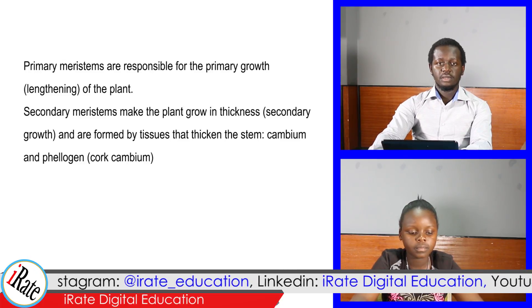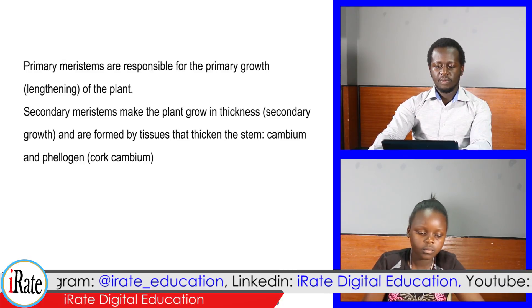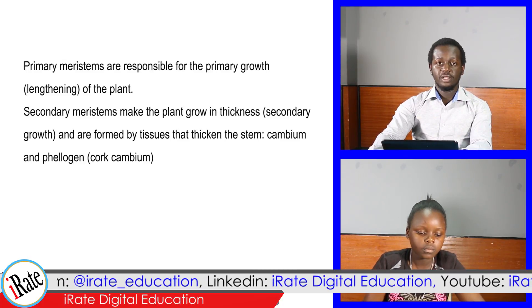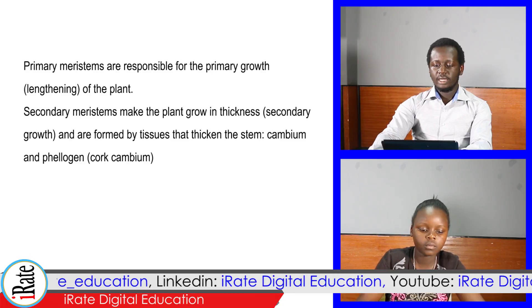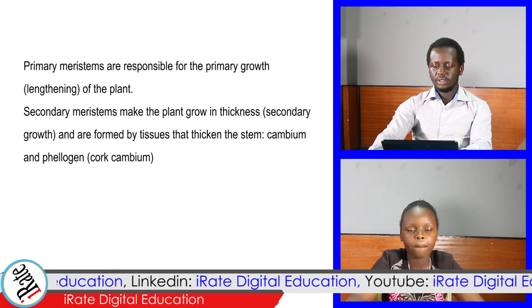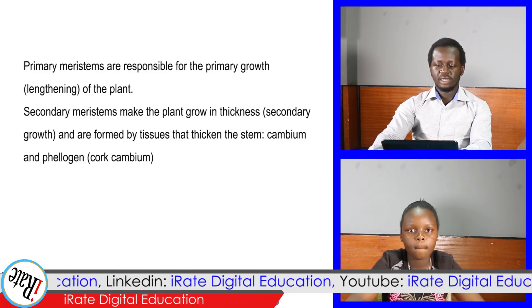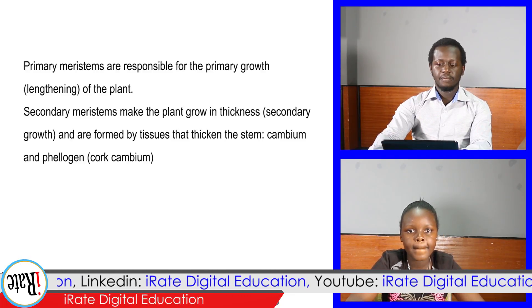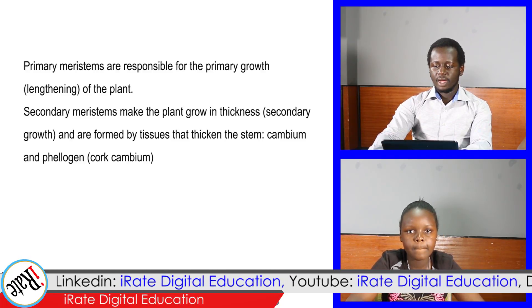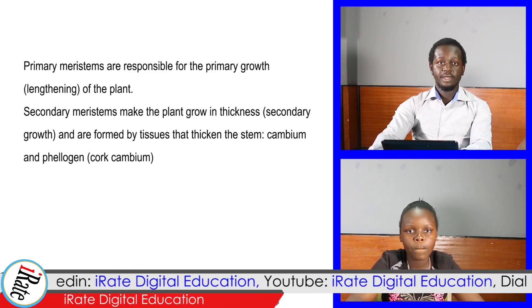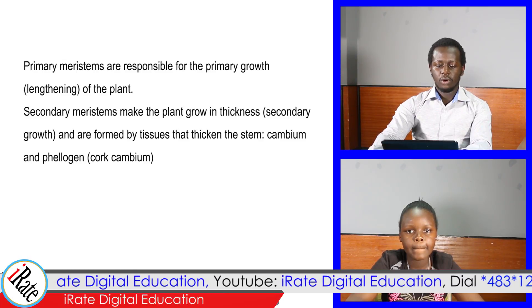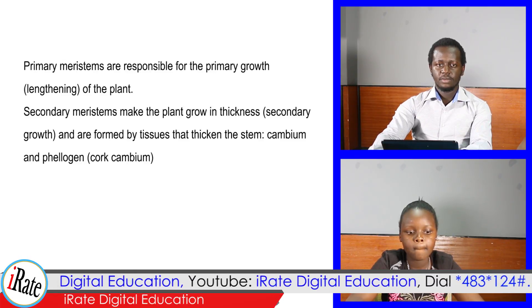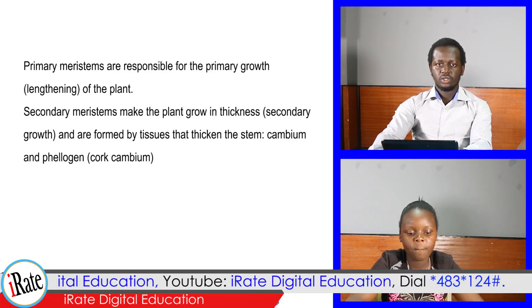Secondary meristems make the plant grow in thickness and are formed by tissues that thicken the stem: cambium and phelogen, that is, cork cambium.